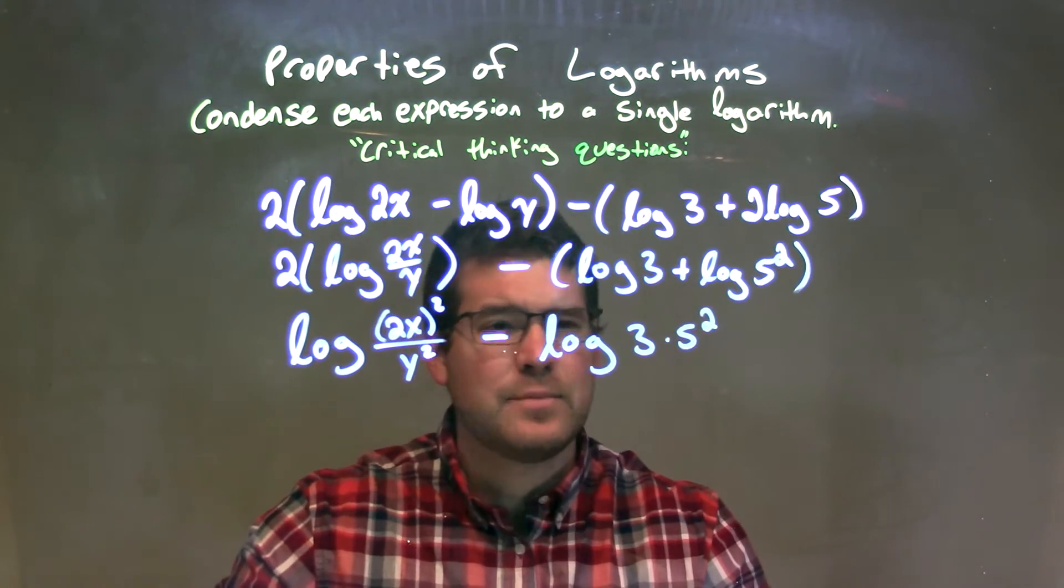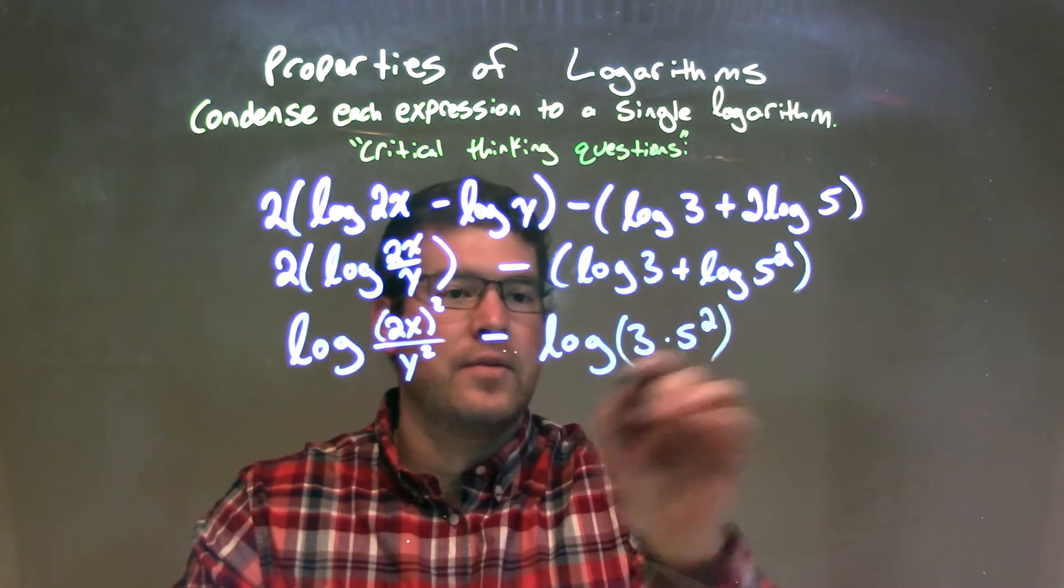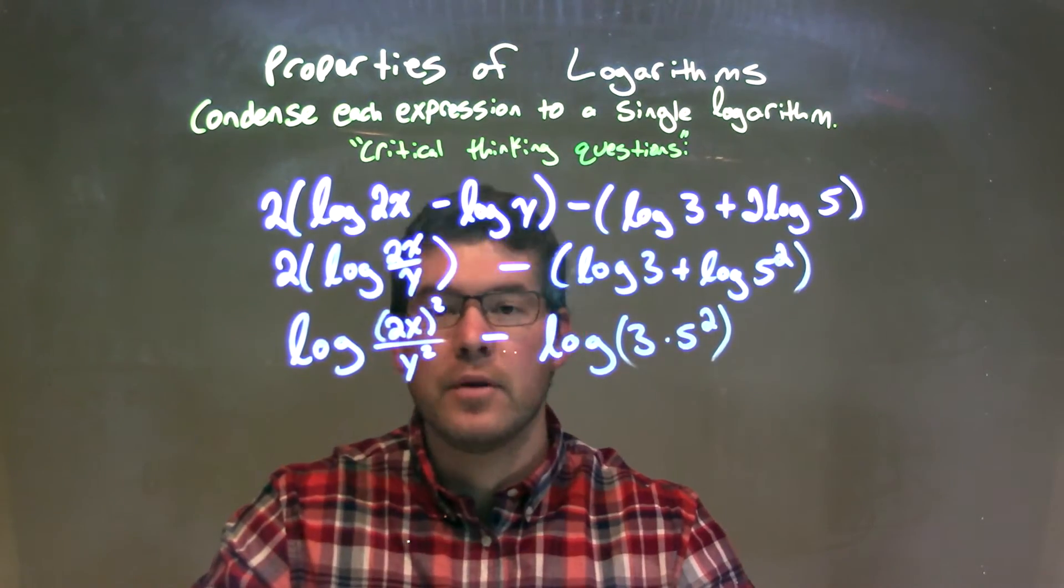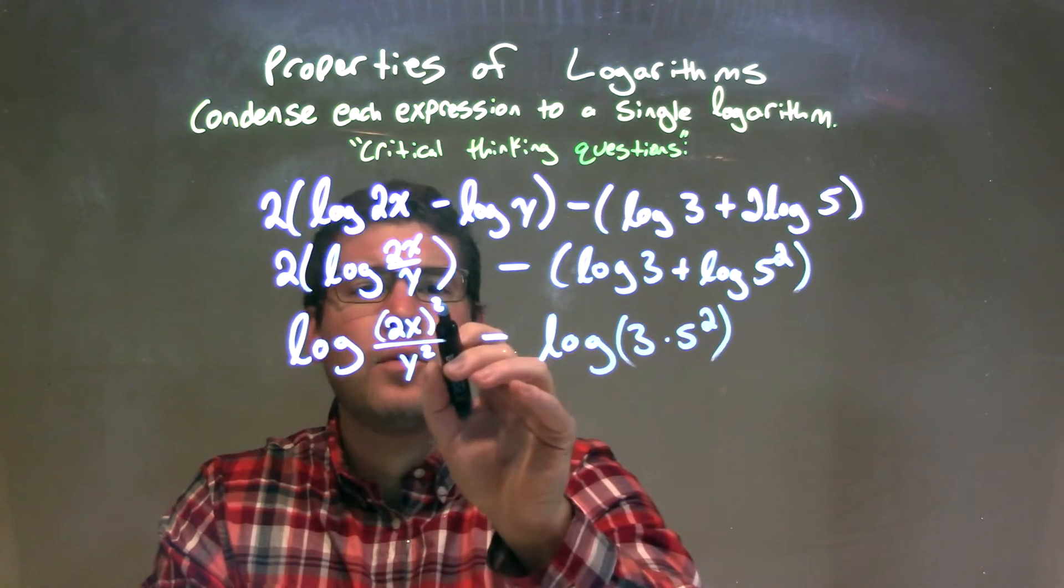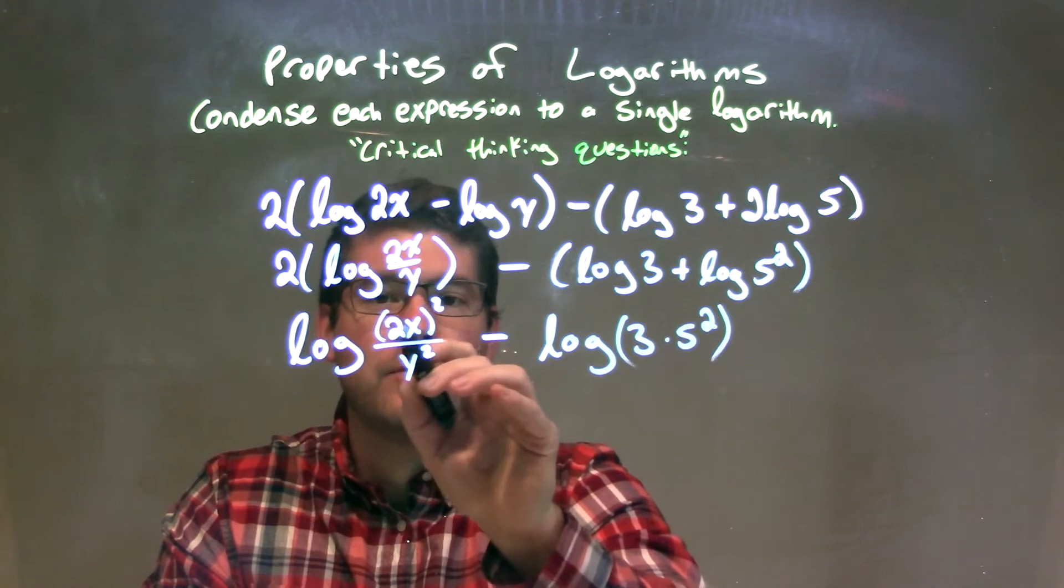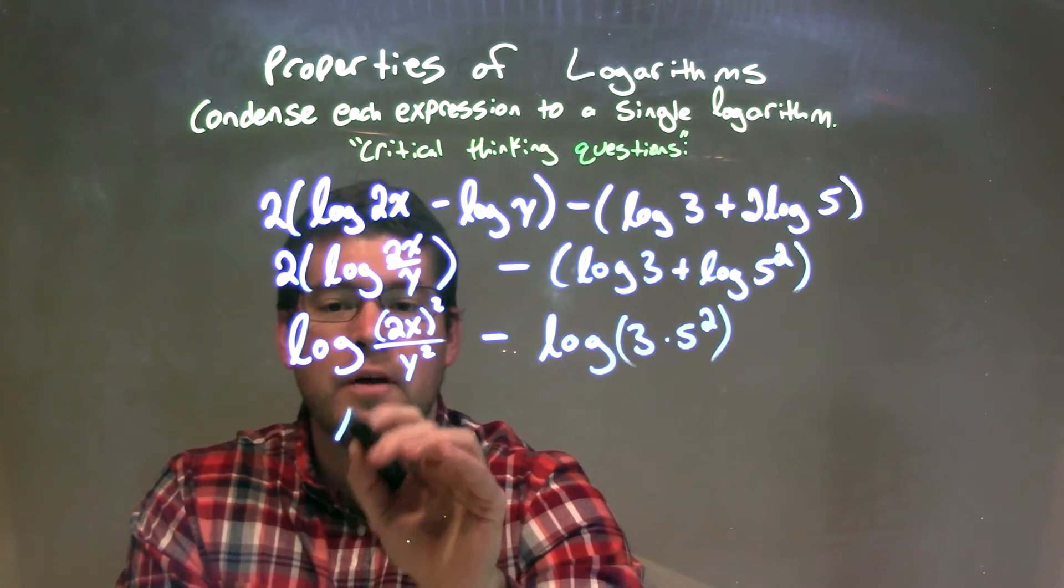So let's try to simplify this a little bit, because we have 3 times 5 squared right there, which we can simplify to be a real number here. And same thing with the square, the 2 and the x, right, the 2x all squared.